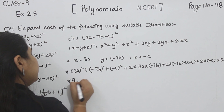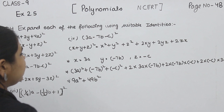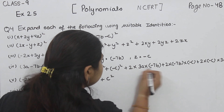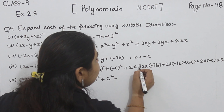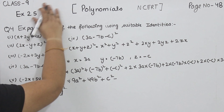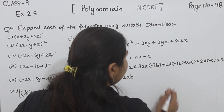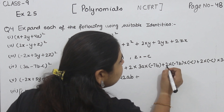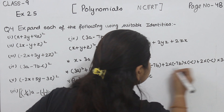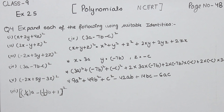Now solving: 3 squared is 9, so 9a square, plus 7 squared is 49 and minus times minus is positive, so 49b square, plus c square — minus times minus cancelled gives positive. Now plus 2 times 3a times minus 7b gives minus 42ab. Plus 2 times minus 7b times minus c — minus times minus cancelled — gives positive 14bc. Wait, 7 times 2 is 14, so 14bc. Now here plus 2 times minus c times 3a gives minus 6ac. This is part 4.